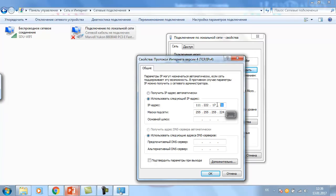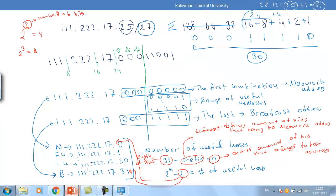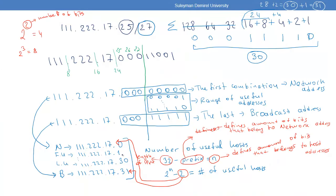But if you use address 30, it works — because it is a useful address. From address 1 through 30 are all useful addresses we can use inside this network. Using our formula: 32−27=5, so n=5, and 2^5−2=30. So inside this network we can have a maximum of 30 useful hosts.